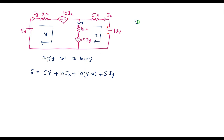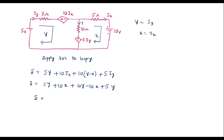Here we can see that y is nothing but iy, and x is nothing but ix. Simplifying: 0 equals 5y plus 10x plus 10y minus 10x plus 5y. The 10x terms cancel, giving 5y plus 10y plus 5y equals 20y. Therefore y equals 5 divided by 20, which equals 0.25 amps. So y equals iy equals 0.25 amps.